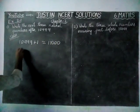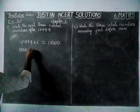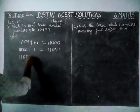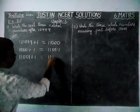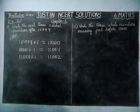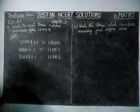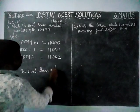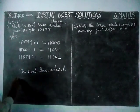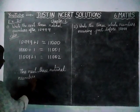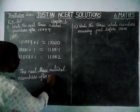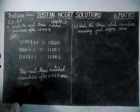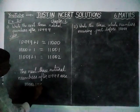Now we are going to add 1 to this: 11000 plus 1 is equal to 11001. Again, we are going to add 1 to this number: 11002. Therefore, the next 3 natural numbers are 11000, 11001, and 11002.